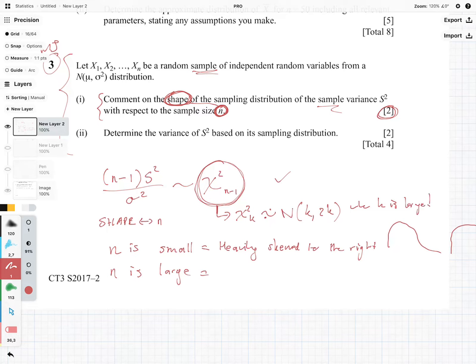Which means that when n is large, because we know what the shape of the normal distribution is, we know it is going to therefore be symmetrical.